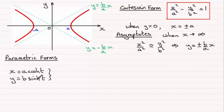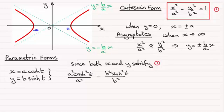And we can see that this will work because if I substitute these values for x and y into the Cartesian form, then what we get is a squared cosh squared t over a squared minus b squared sinh squared t over b squared. Well in this the a squared cancel one another out, the b squareds cancel one another out. And you're just left with this equaling cosh squared t minus sinh squared t. And we should be familiar with this identity. It equals one. So you can see that both x and y satisfy the Cartesian form here.